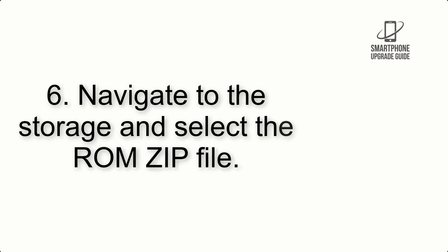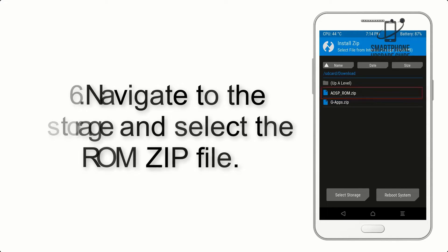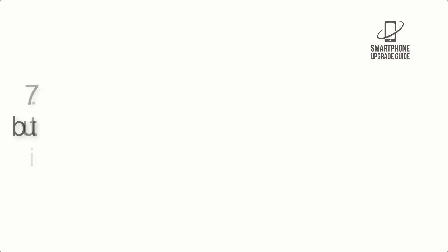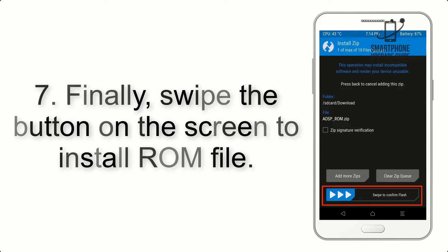Step 6: Navigate to the Storage and select the ROM ZIP file. Step 7: Finally, swipe the button on the screen to install the ROM file.